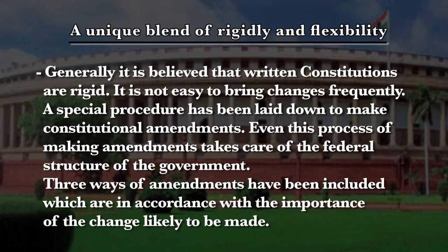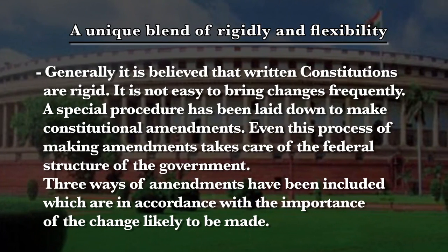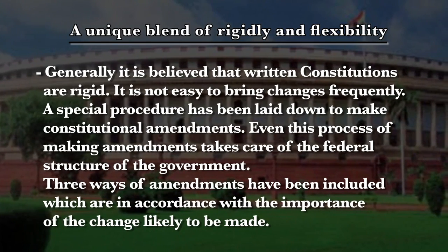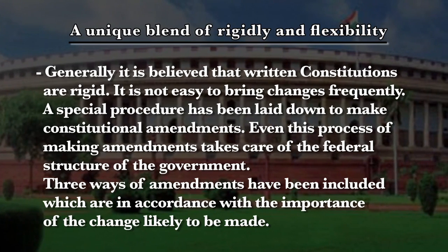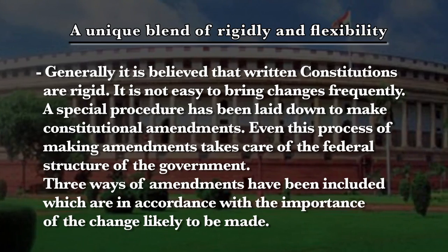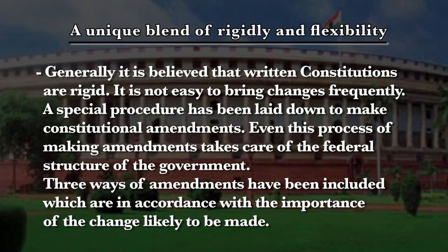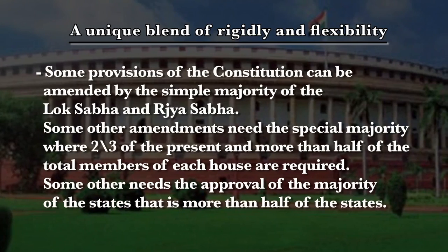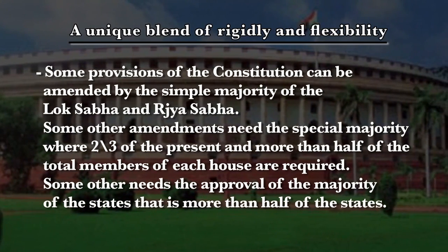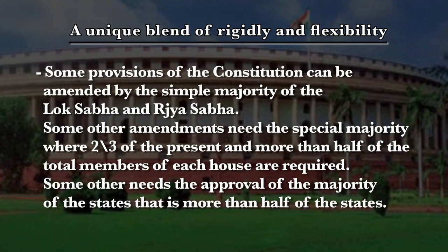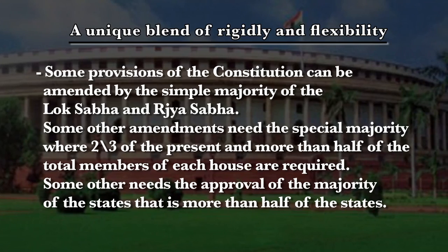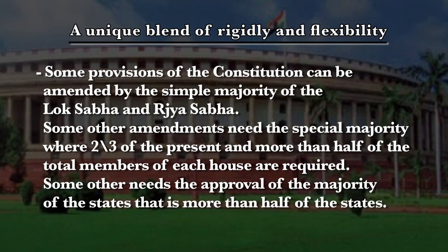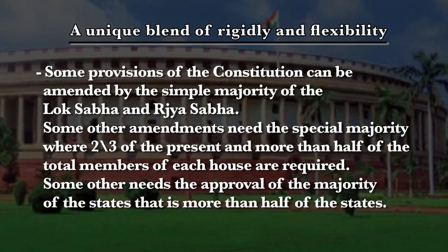Generally it is believed that written constitutions are rigid and cannot be easily changed. But our constitution has a special procedure laid down to make constitutional amendments. There are three ways of making amendments: some provisions can be amended by a simple majority of Lok Sabha and Rajya Sabha; some need a special majority of two-thirds of present members and more than half of the total strength of each house; and some need the approval of more than half of the Indian states.